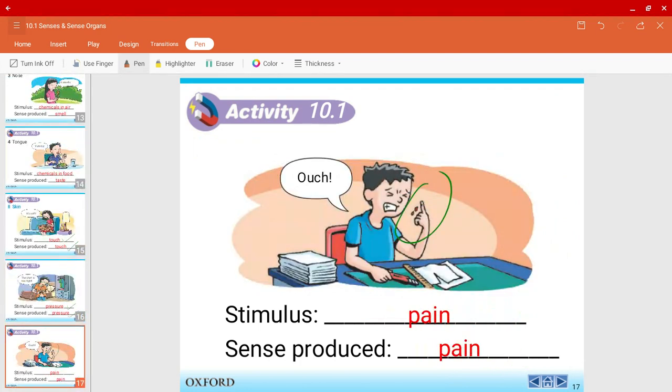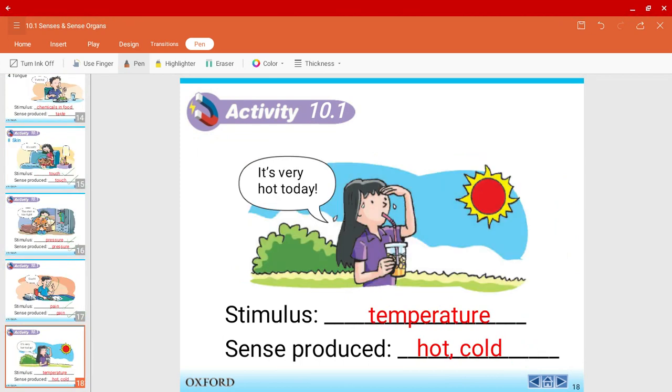There is a paper cut. The stimulus is pain and the sense produced is also pain. Over here is a very hot day outside. The stimulus is temperature. However, the sense that you produce is either hot or cold.